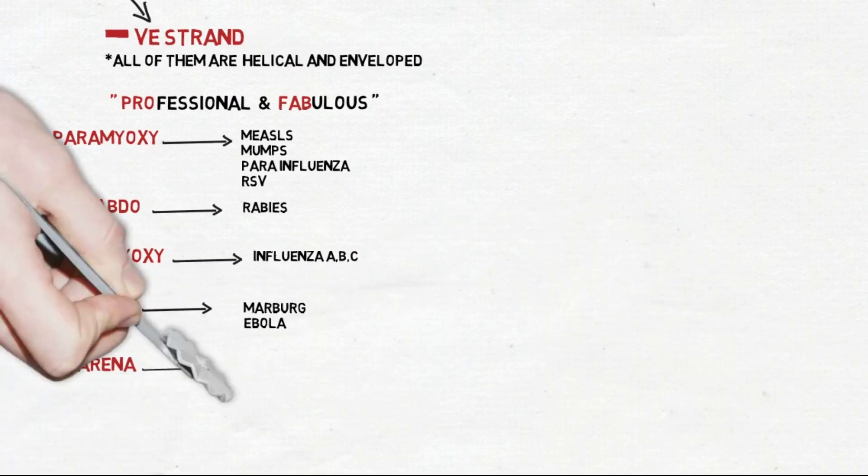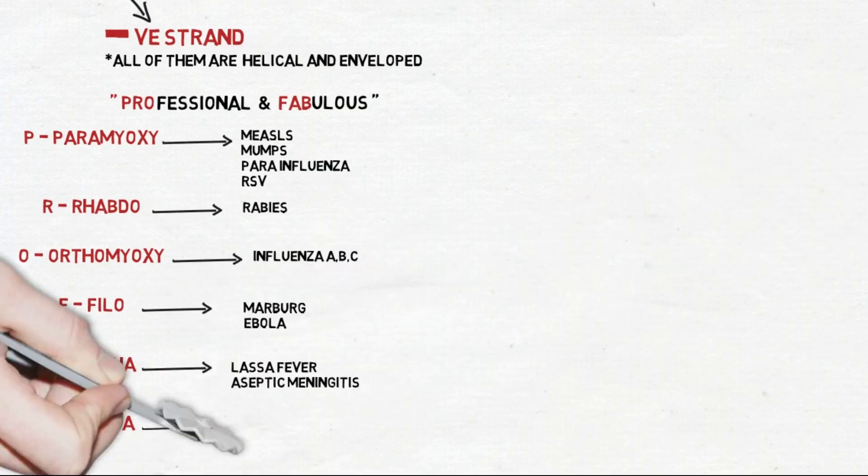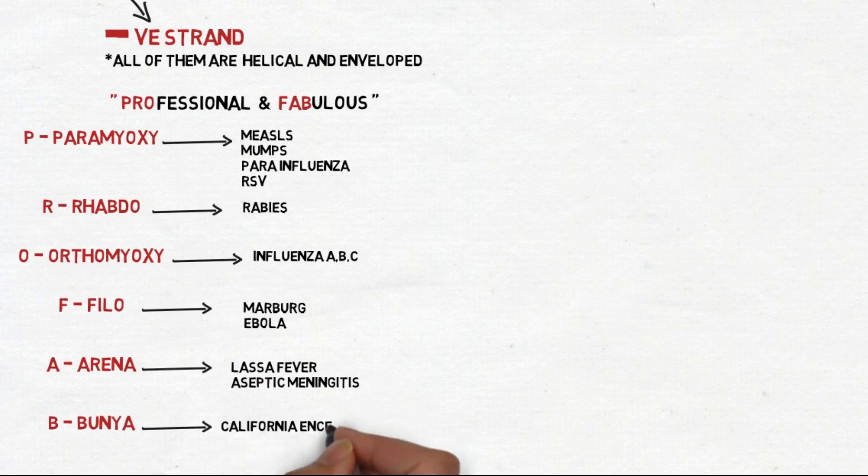A stands for Arenavirus, which includes Lassa fever and aseptic meningitis. B stands for Bunyavirus, which includes California encephalitis and hemorrhagic fever.